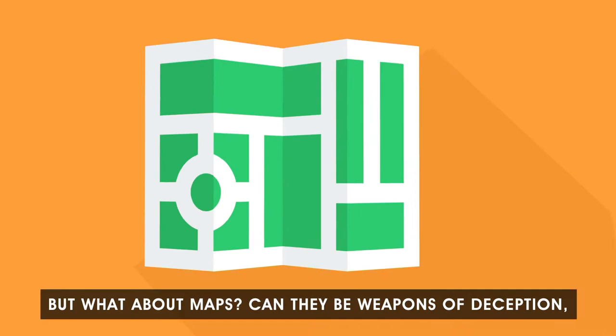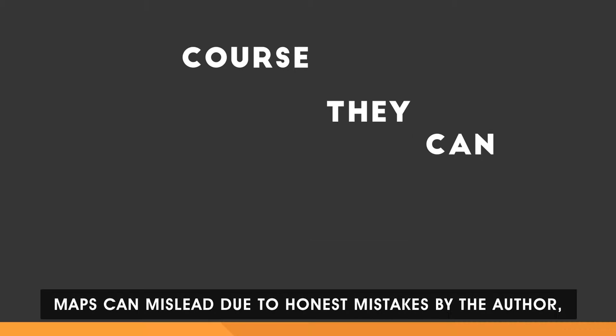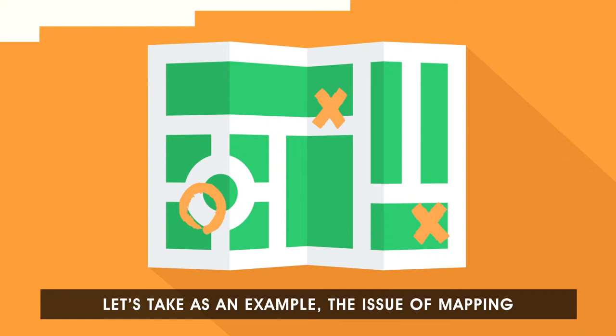Do maps lie? We all know the phrase 'lies, damn lies and statistics' and we know that data can be used and abused. But what about maps? Can they be weapons of deception or tools of tyranny? Of course they can. Maps can mislead due to honest mistakes by the author, or they can mislead us on purpose.